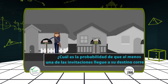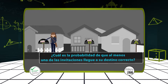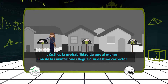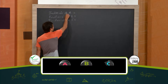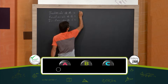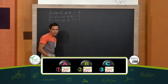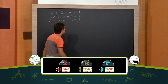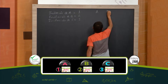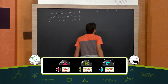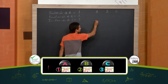¿Cuál es la probabilidad de que al menos una de las invitaciones llegue a su destino correcto? Entonces, vamos a hacer lo siguiente. Por notación, vamos a decir que la invitación de A es la invitación 1, esta es la 2 y esta va a ser la 3. Acá está el buzón de A, acá está el buzón de B y aquí está el buzón de C. ¿Cuáles son las posibilidades?